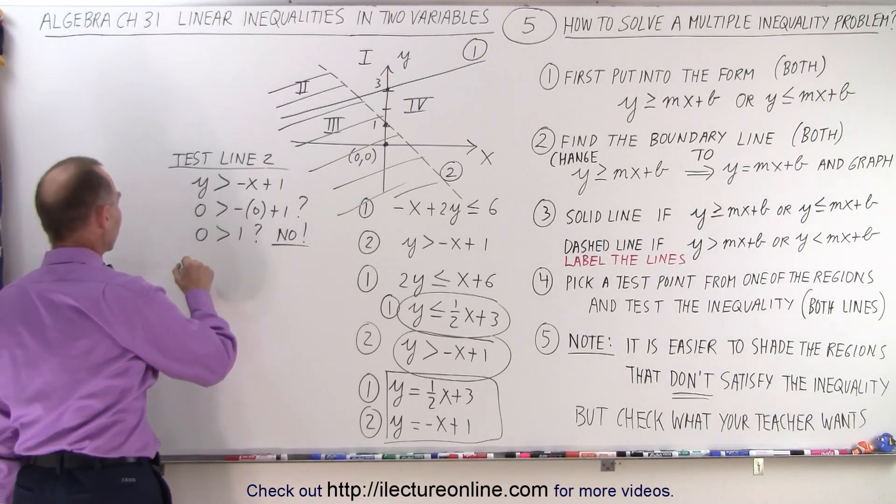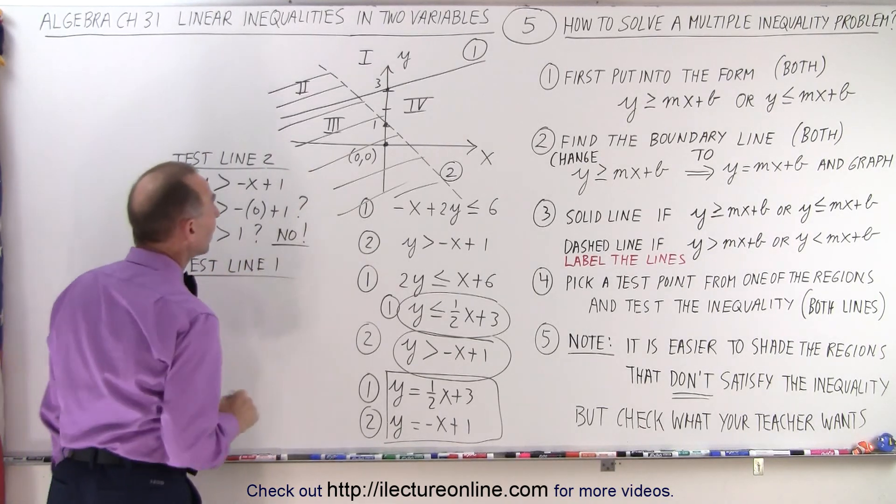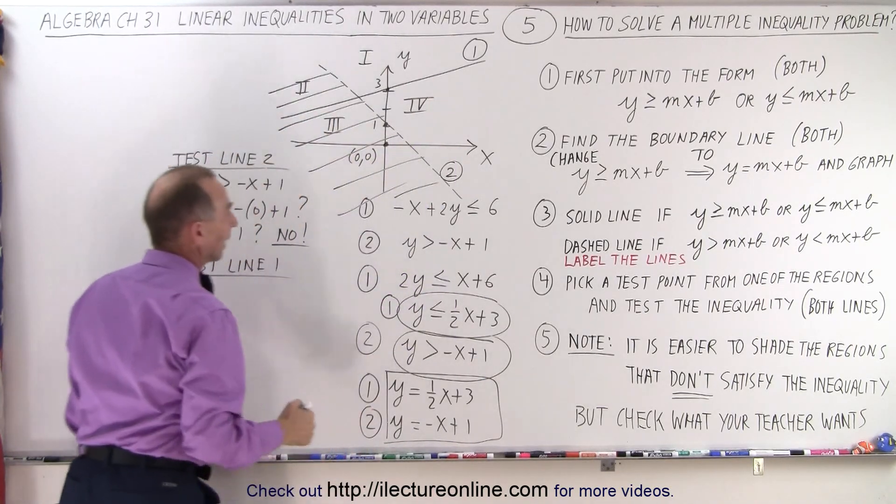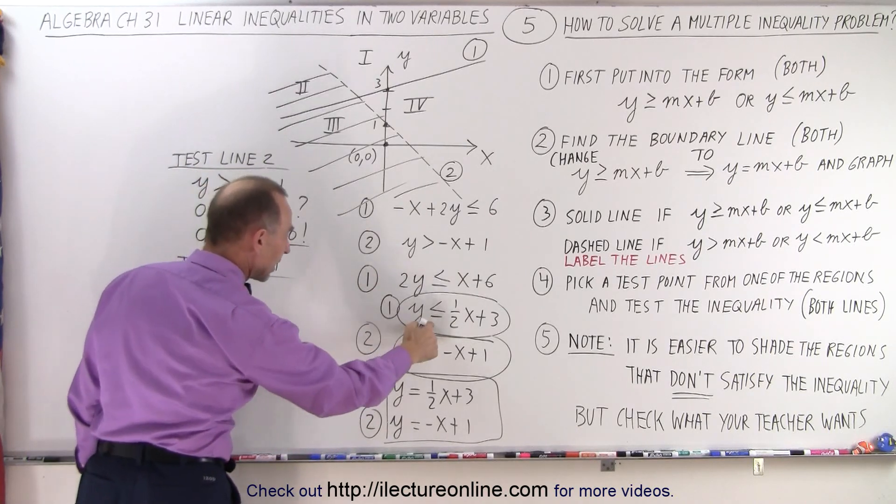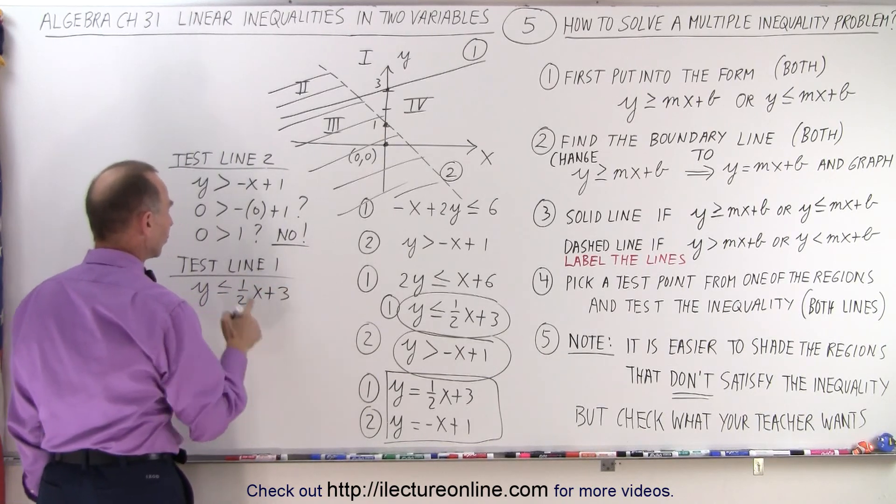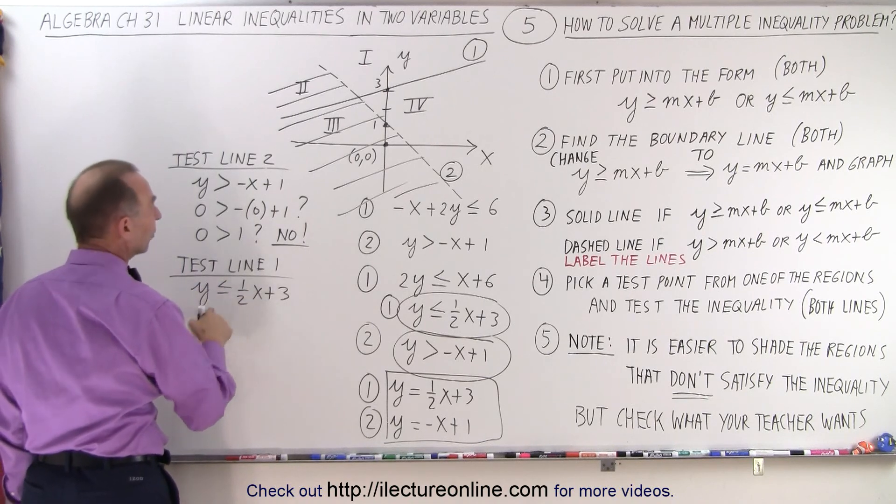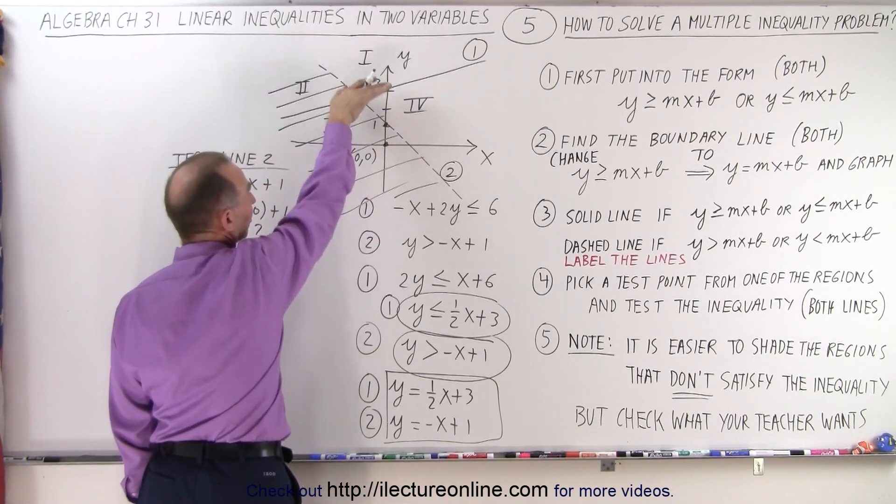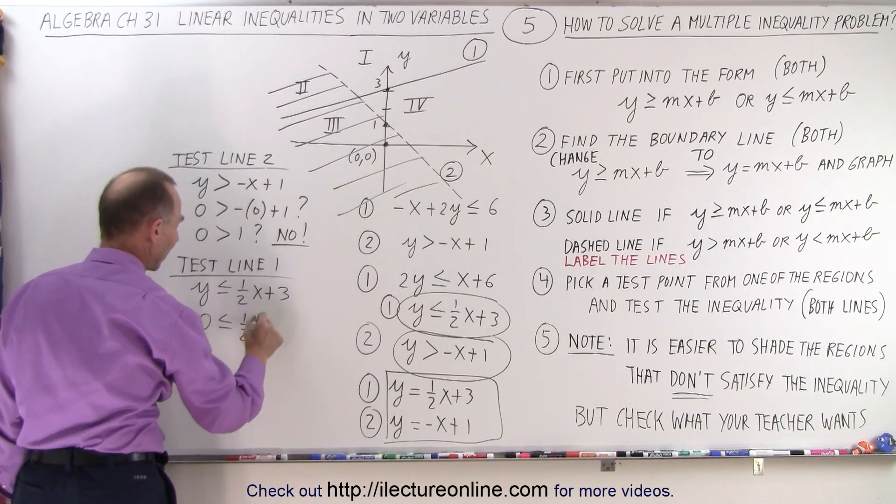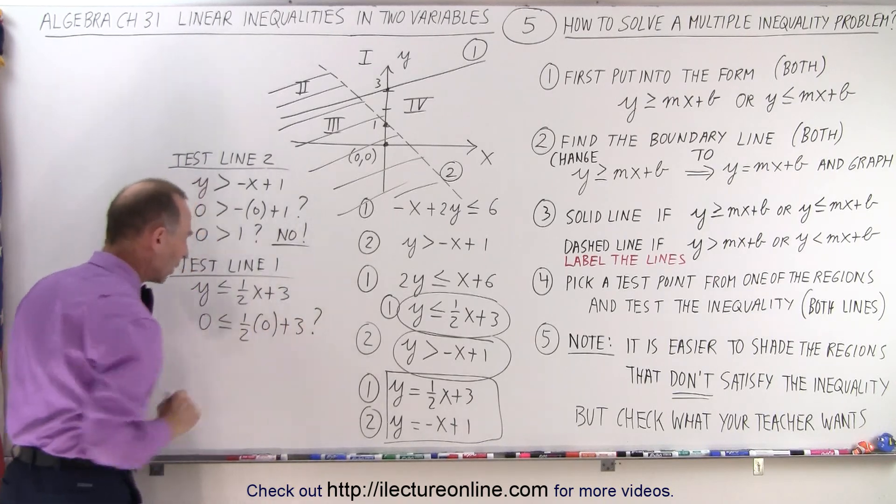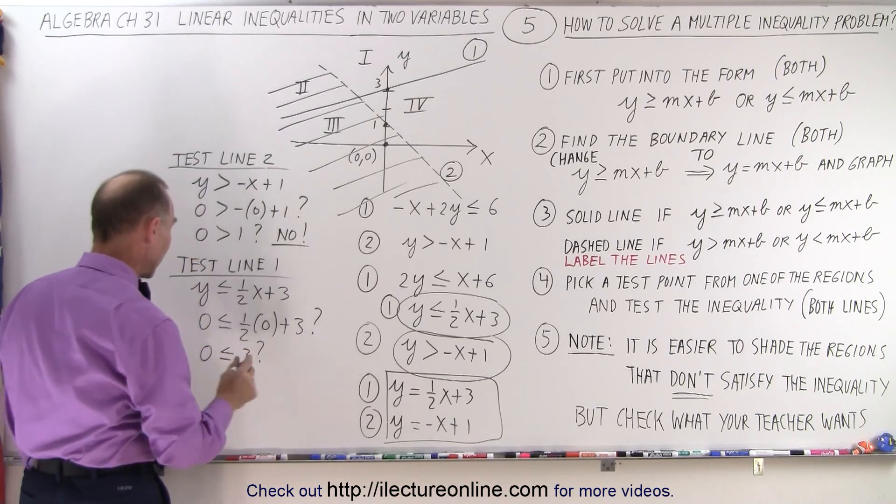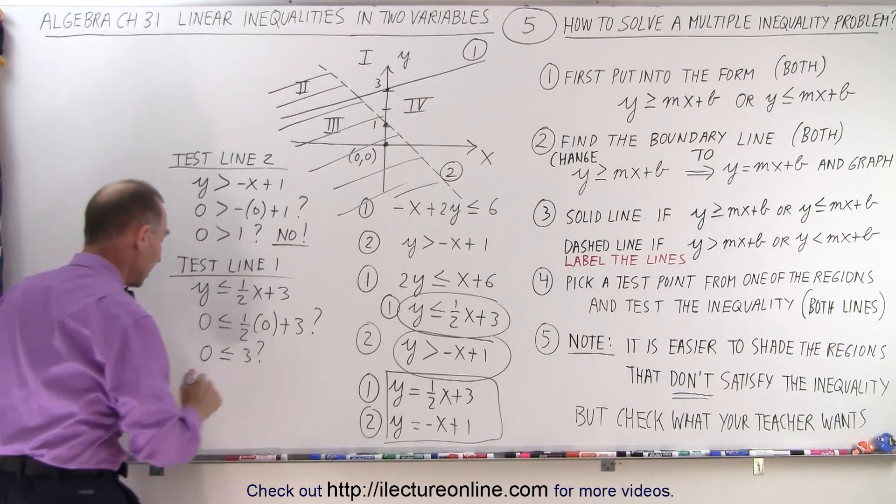Now we're going to test line number 1. I can pick the very same test point for line number 1. The inequality for line number 1 is y is less than or equal to 1/2 x plus 3. We're going to do a test by plugging in (0,0), so 0 less than or equal to 1/2 times 0 plus 3. Simplifying this, we have 0 less than or equal to 3, and the answer is yes, 0 is less than 3.